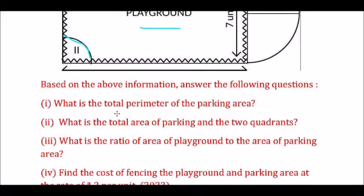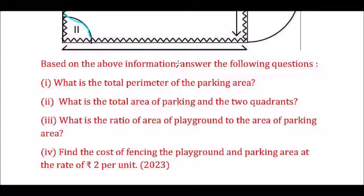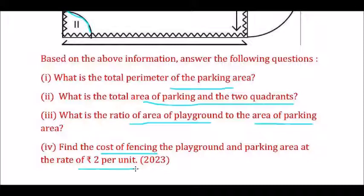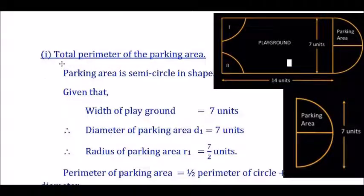Based on the above information, answer the following questions: What is the total perimeter of the parking area? What is the total area of parking and two quadrants? What is the ratio of area of playground to the parking area? Find the cost of fencing the playground and parking area at the rate of rupees 2 per unit. This question appeared in the 2023 board examination.